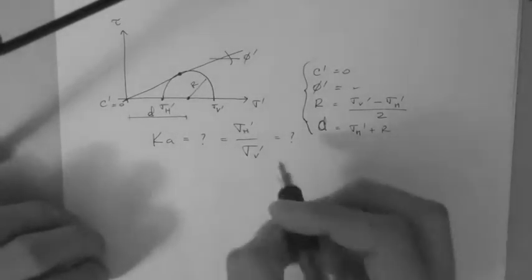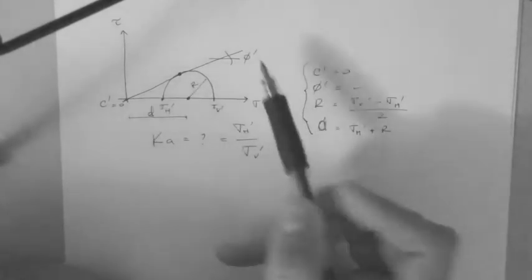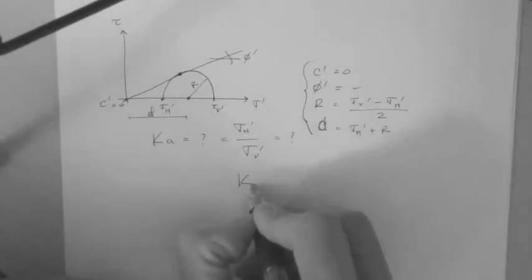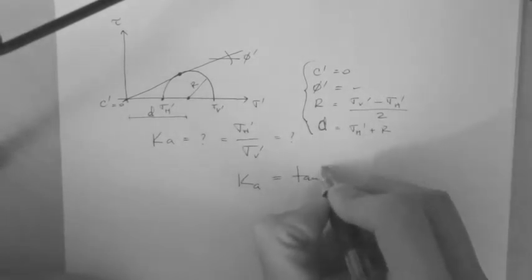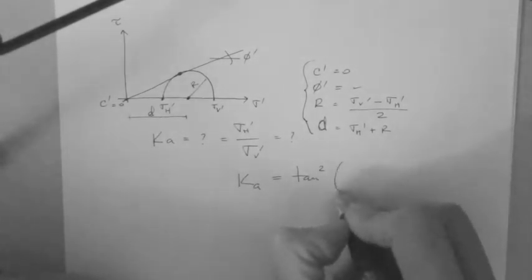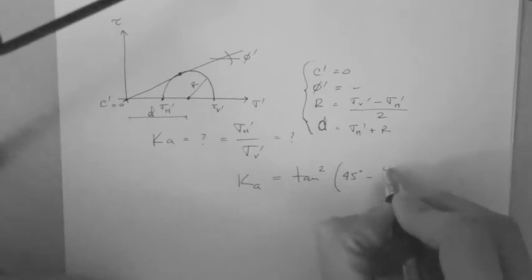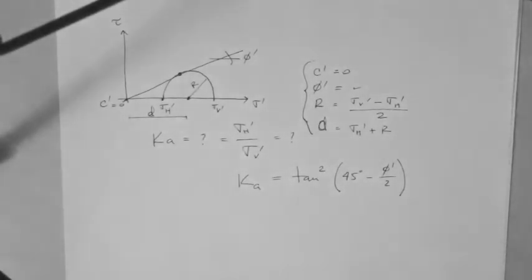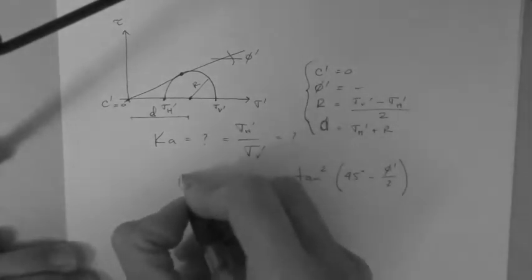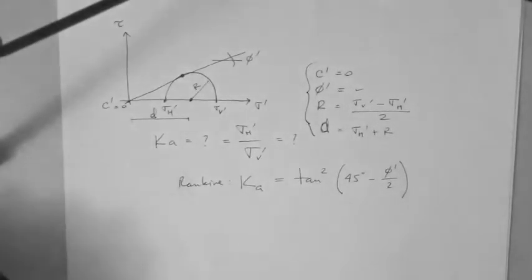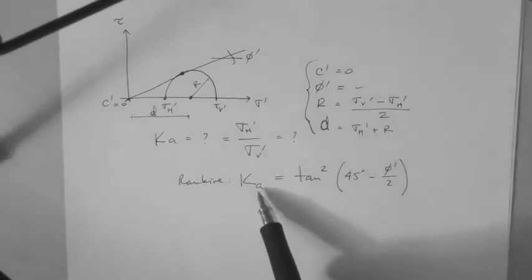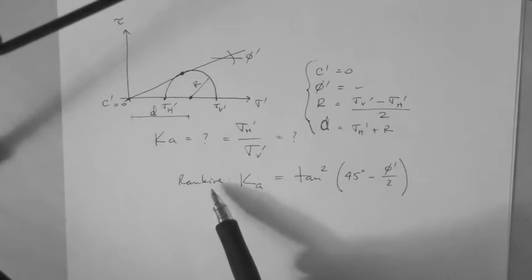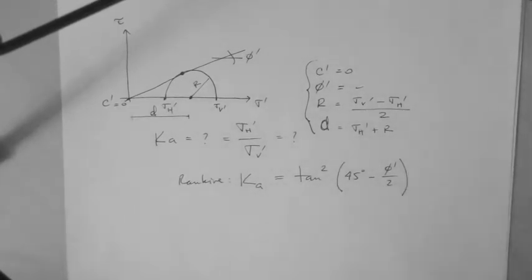You find that the relationship between the horizontal stress and the vertical stress is tangent squared of 45 degrees minus phi over 2. So that is the Rankine active, the Rankine theory - the lateral stress ratio in the active condition as derived by Rankine. Tangent squared 45 minus phi over 2.